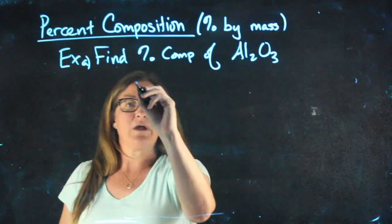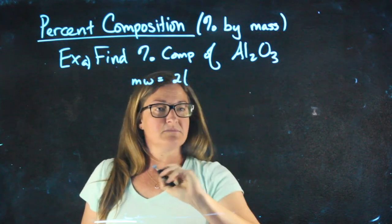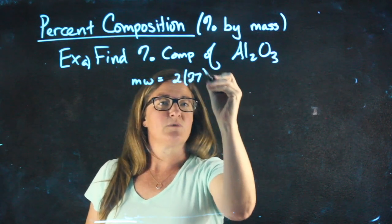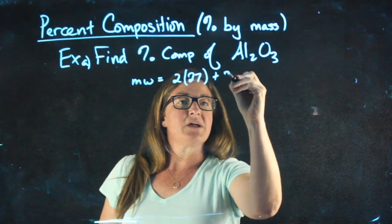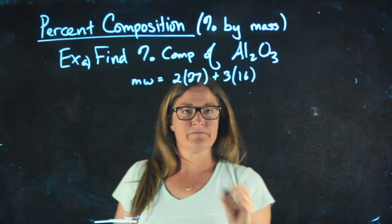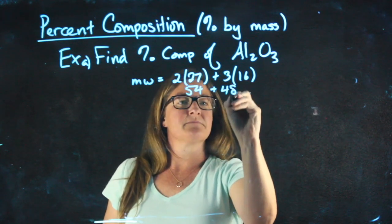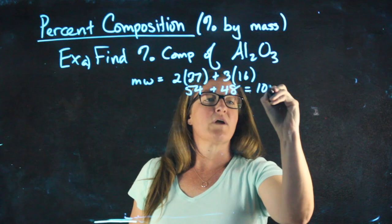If I were to look at the molecular weight of this, I have two aluminums. Each aluminum has a molecular weight of 27. I have three oxygens. Each oxygen has a weight of 16, which gives us 54 plus 48, or a total of 102.